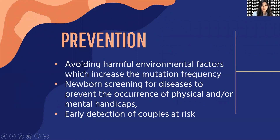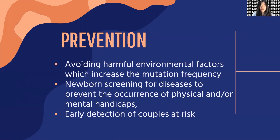Since amino acid metabolism disorders are inherited, it is almost impossible to prevent them entirely, but we can lower the risk. First, avoid harmful environmental factors that increase mutation frequencies. Second, conduct newborn screening — through these programs we can prevent the disease from developing further, and if a child does have the disease, treatment can begin as soon as possible to prevent serious complications. Third, early detection of couples at risk: while prevention is not possible, testing both parents to determine which carries the gene and consulting a doctor can help determine individual risk.